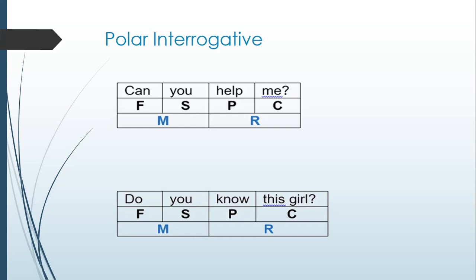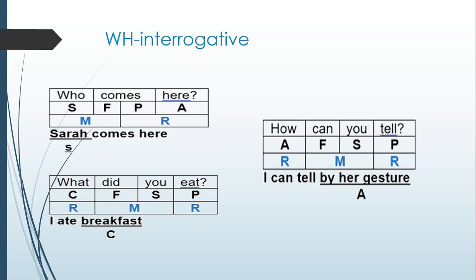The WH questions or the WH interrogative is a little bit trickier compared to the polar interrogative. It is because you need to first determine the functions of the WH words. It means you need to find out what the WH word talks about. If it asks about the subject of the clause, like who comes here, the WH question will work as the subject, which means it is a part of mood. Like again in the clause, who comes here? Who is the subject? Because when we answer it, we will say Sarah comes here.